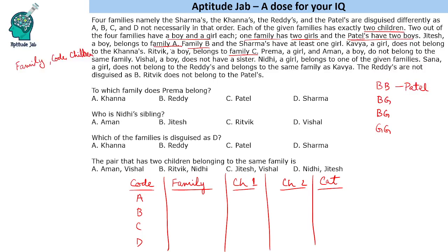Jitesh, a boy, belongs to family A. So Jitesh belongs to family A. Since Jitesh is present, this family has at least one boy — so it will be either boy-boy or boy-girl. We will put B for now and leave a blank. Then it says family B and Sharma's have at least one girl. The word 'and' means these are two separate entities — family B is different and Sharma's is a different thing. So family B has at least one girl. Kavya, a girl, does not belong to Khanas — we will come to that negative statement later.